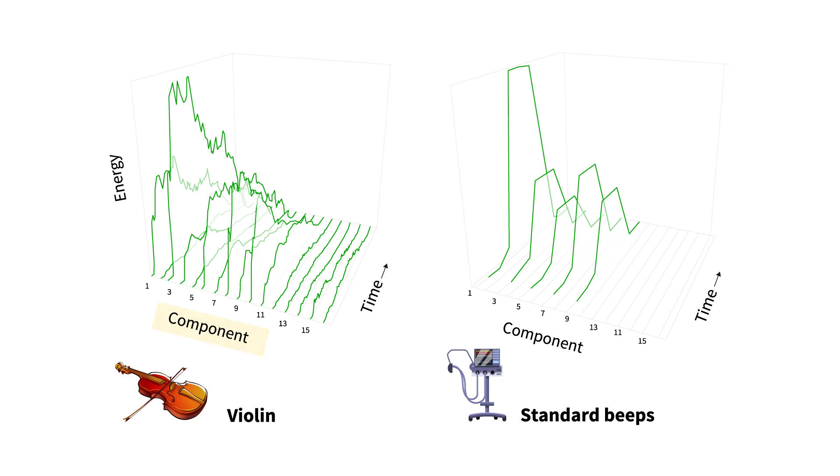In musical instruments such as the violin, the strength of individual components varies continually over time, with each component moving somewhat independently. Yet in many medical devices, the components are relatively constant and typically start and stop at the same time.